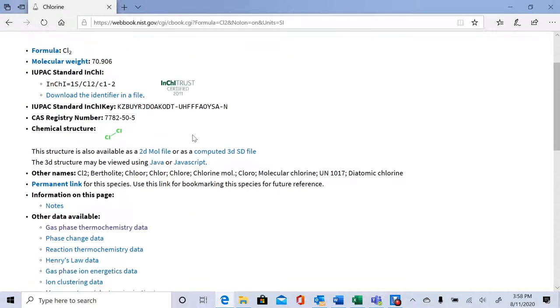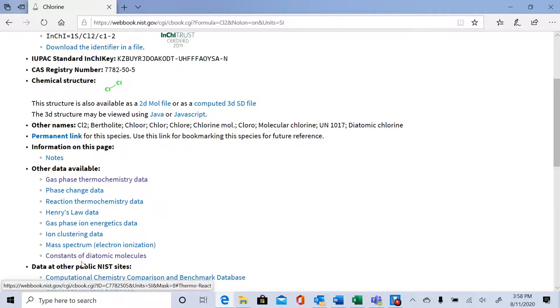If we scroll down, the data we are looking for in this lab, and general values that may be of interest, are usually in these two bullet points: gas phase thermochemistry data and constants of diatomic molecules.